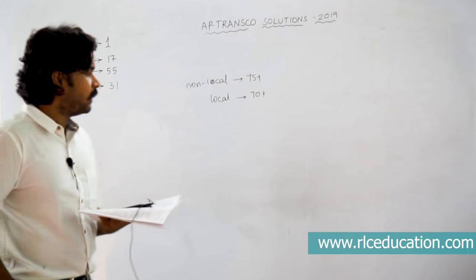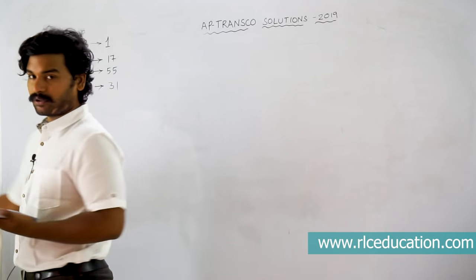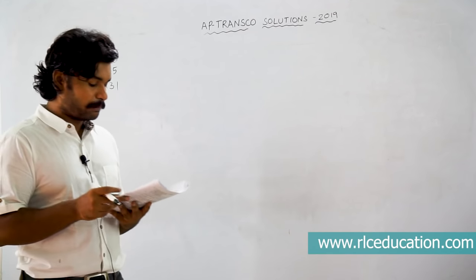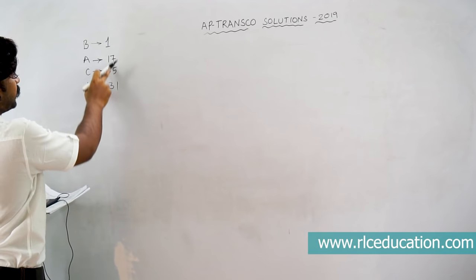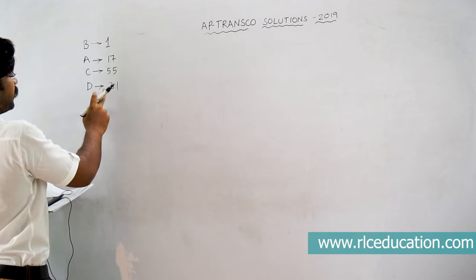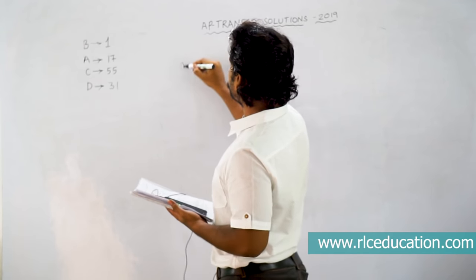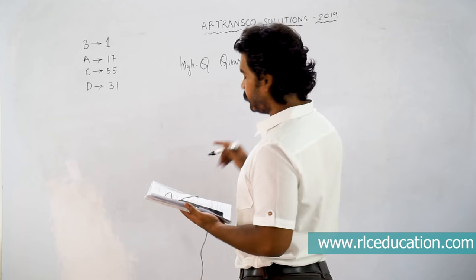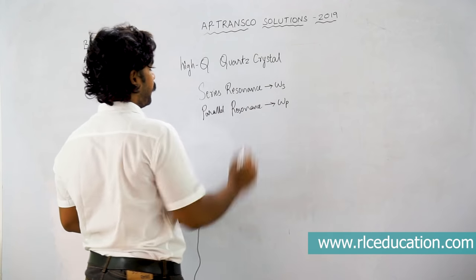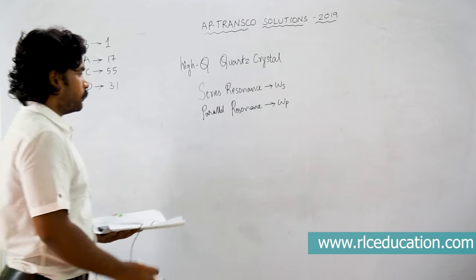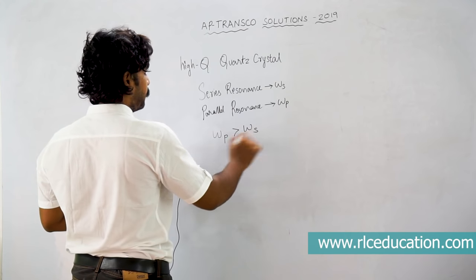Without much delay, I will solve most of the questions. My reference set is B. The first question in B set (question 1 in B, 17 in A, 55 in C, 31 in D) asks about a quartz crystal — a high-Q crystal that exhibits series resonance at frequency ω_s and parallel resonance at frequency ω_p. The answer is option D: parallel resonance frequency ω_p is greater than ω_s and both are very close to each other.